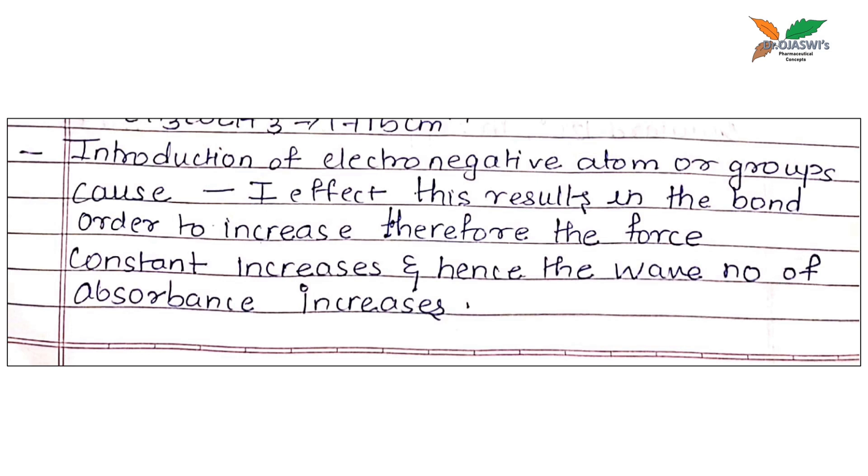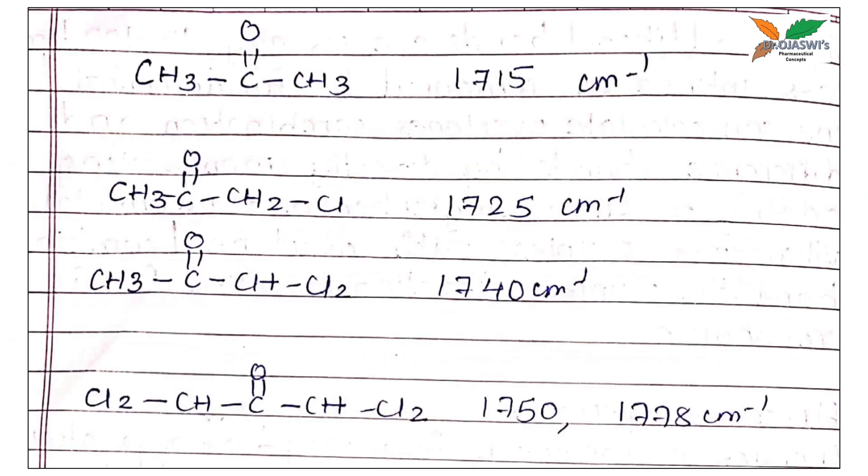Basically, if we are adding the electron withdrawing group in a compound, it will increase the force constant and if the force constant increases, the vibrational frequency also increases. Now, coming to the example, if we are taking acetone, the vibrational band occurred at 1715 cm inverse.